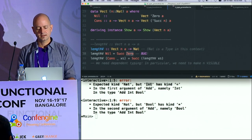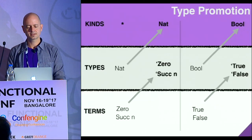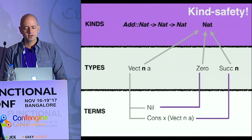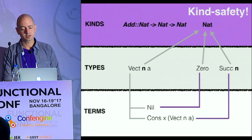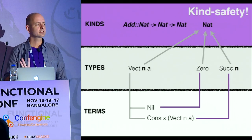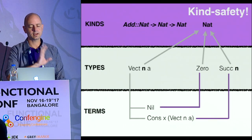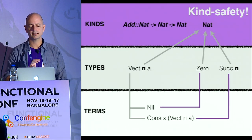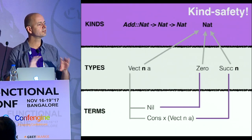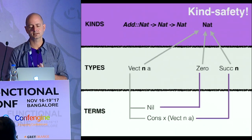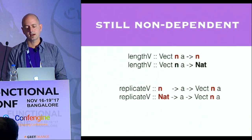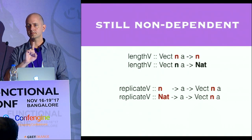Let's soldier on and see what that might look like. With our type promotion of Nat, I've got kind safety — Vector N A, the N is kind safe, Zero and Successor are unified by this type. But we still don't have dependent types.